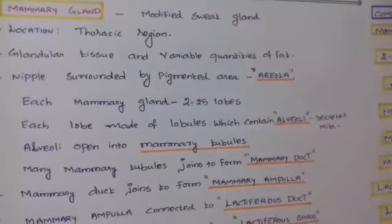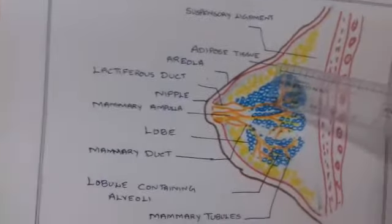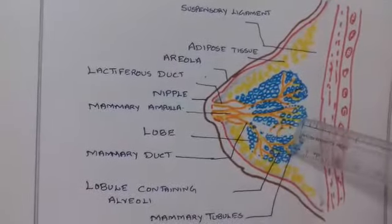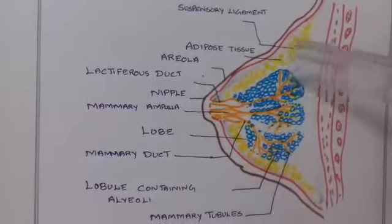All alveoli, a small rounded like structure, all alveoli opens into mammary tubules. This is mammary tubules, these orange color branches.